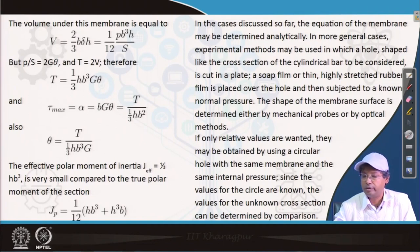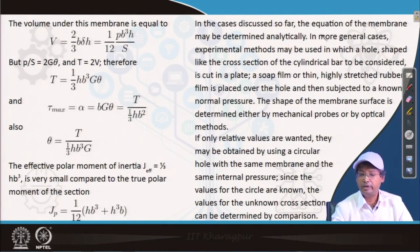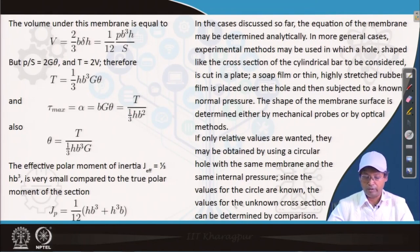In more general cases experimental methods may be used in which a hole shaped like the cross section of the cylindrical bar to be considered is cut in the plate. A soap film or thin highly stretched rubber film is placed over the hole and then subjected to a known normal pressure. The shape of the membrane surface is determined either by mechanical probes or by optical methods. If only relative values are wanted, they may be obtained by using a circular hole with the same membrane and the same internal pressure. Since the values for the circle are known, the values of the unknown cross section can be determined by comparison.